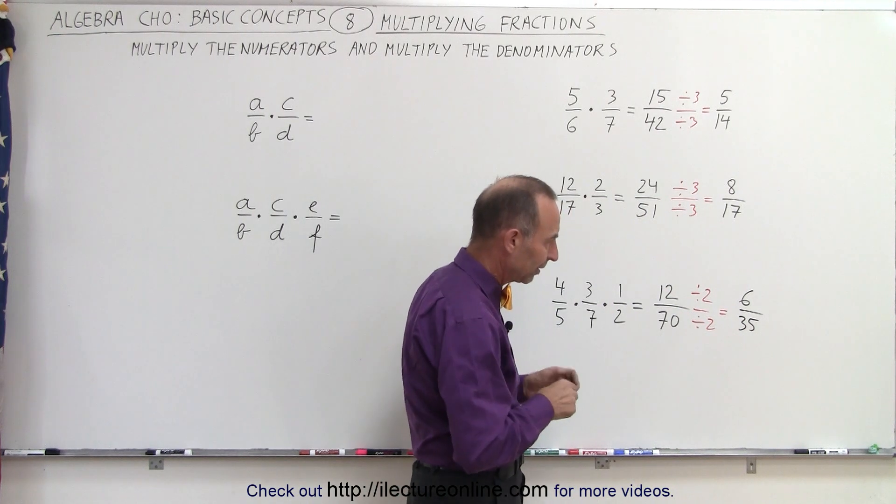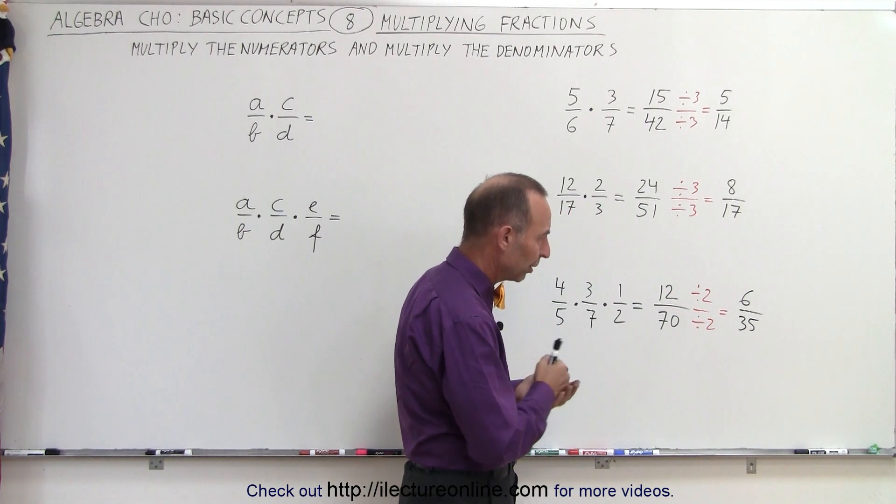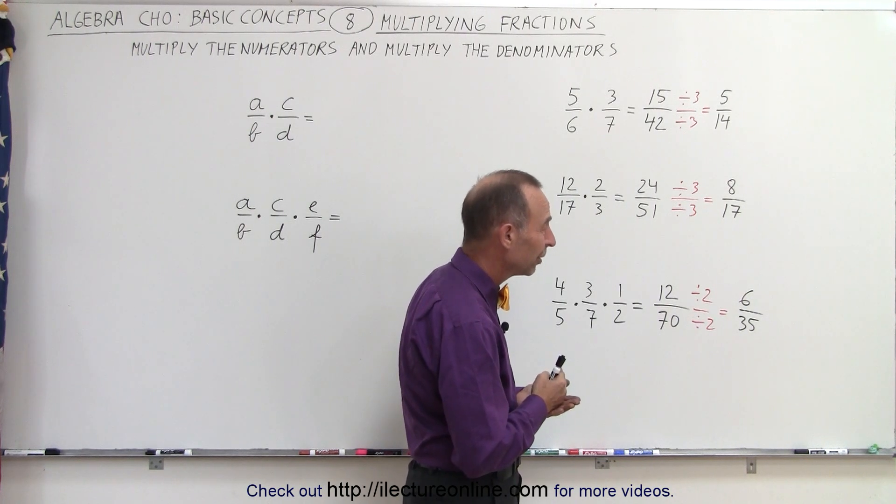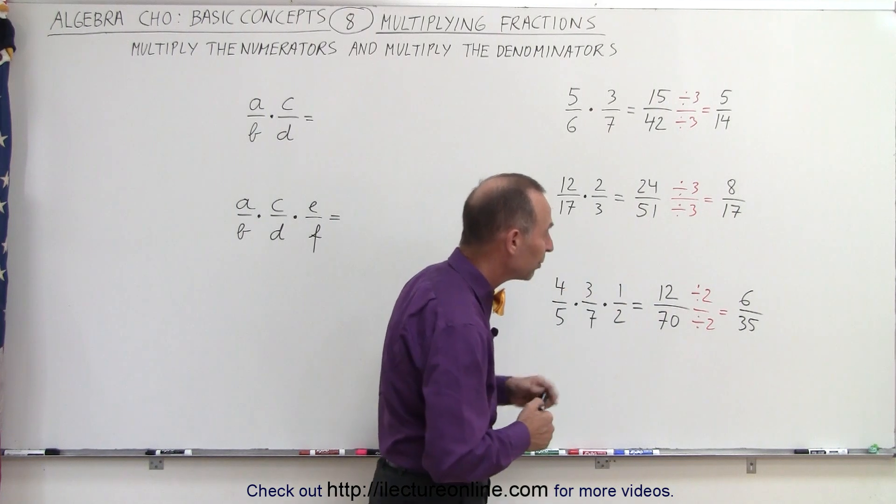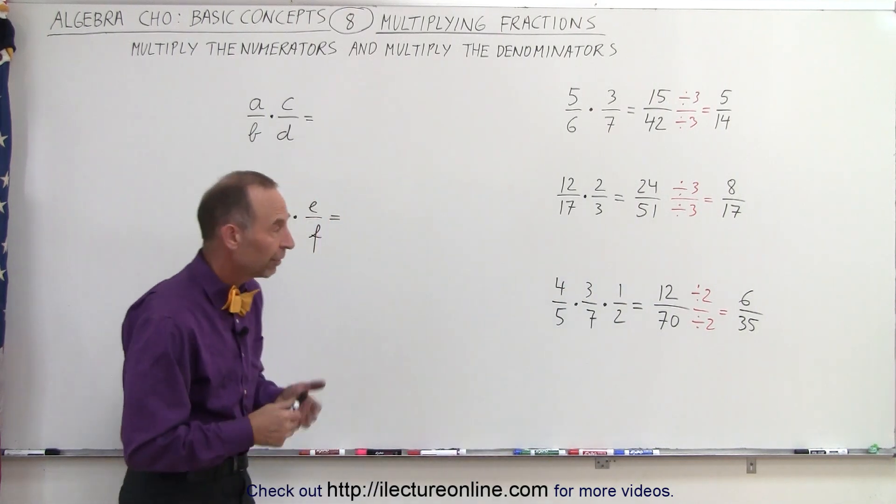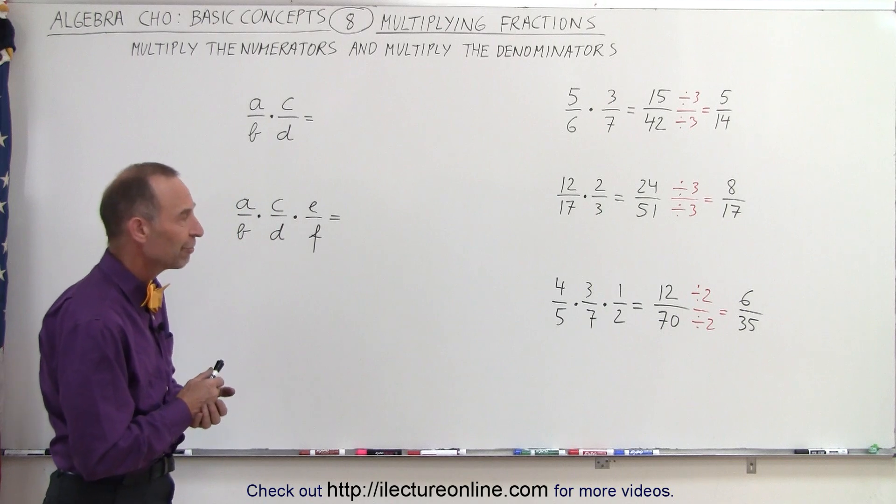Notice that they're both non-divisible by 2, both non-divisible by 3, not by 4, not by 5. Looks like that's probably as far as we can go. So that would be the final reduced form of the product of those 3 fractions.